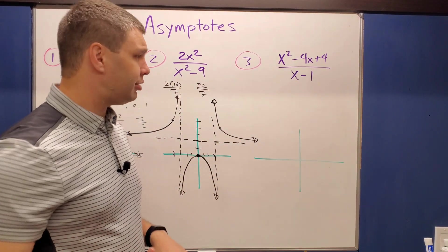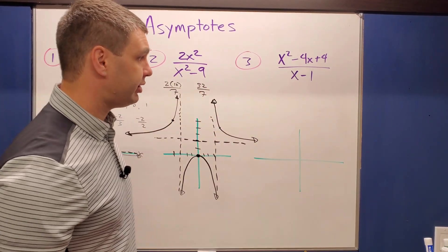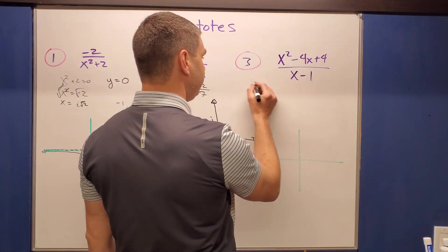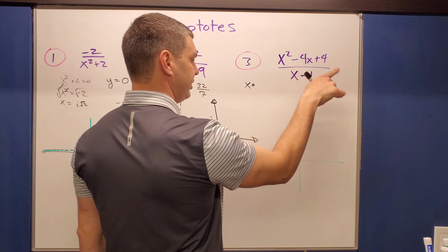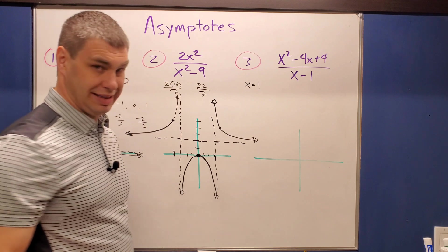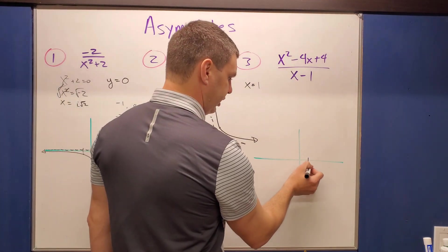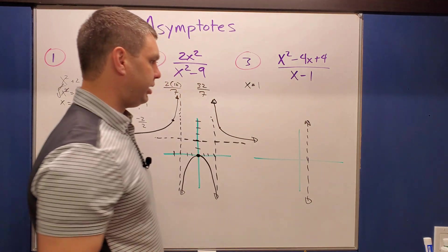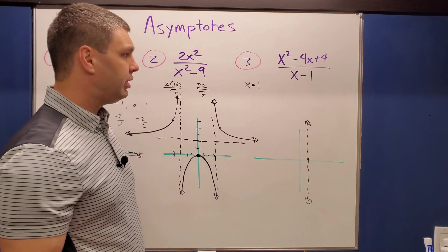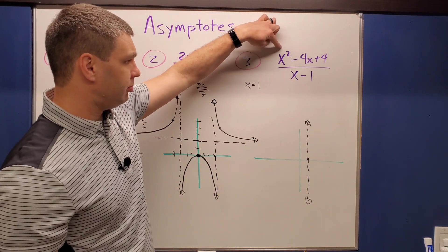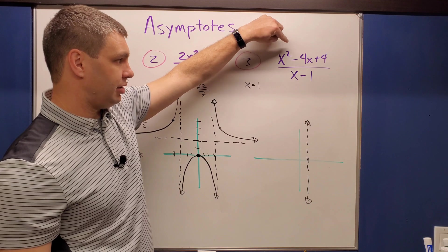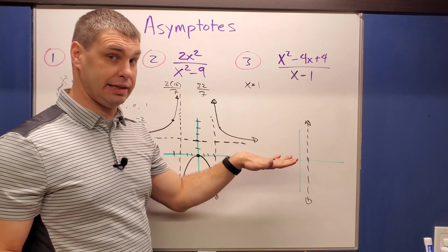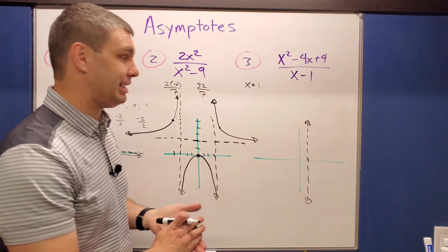The third example is x² minus 4x plus 4 over x minus one. Setting the denominator equal to zero gives x equals one, so the vertical asymptote is at x equals one. For horizontal asymptotes: the numerator has a larger degree than the denominator, so there is no horizontal asymptote, but we need to check for a slant asymptote.